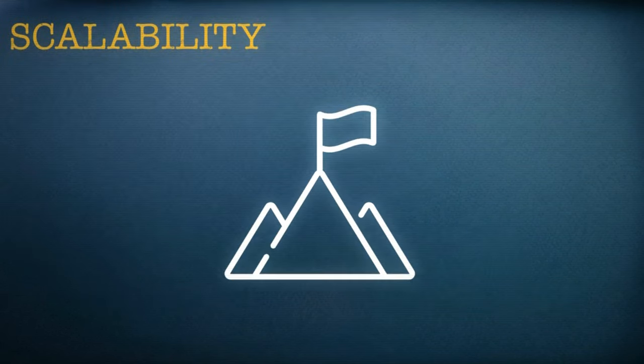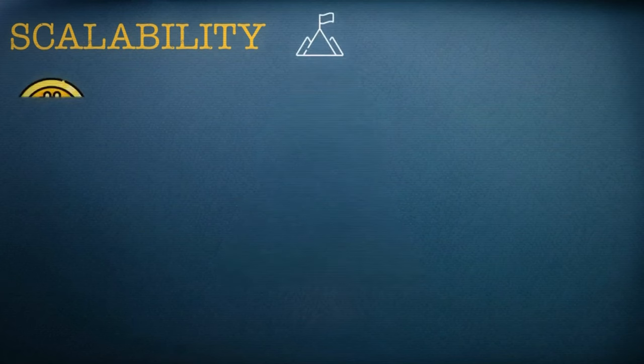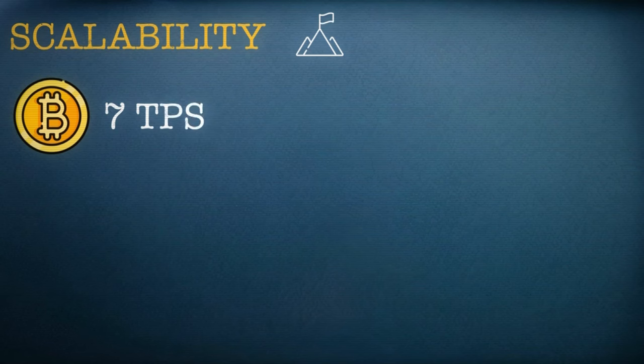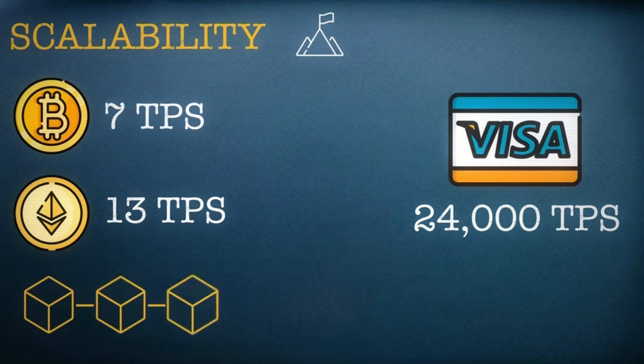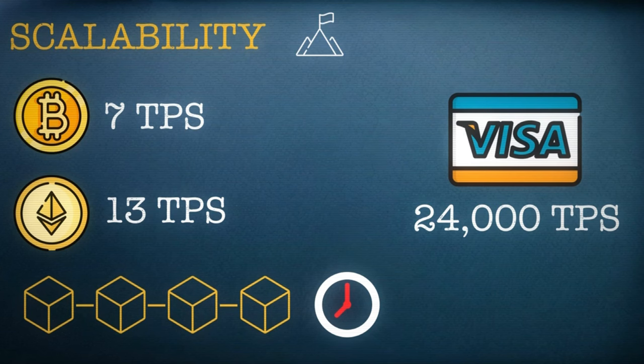Scalability in particular is a big challenge. Right now, the main Bitcoin blockchain can only handle 7 transactions per second, while Ethereum can handle 13. By comparison, the likes of Visa can handle thousands per second. This means that blockchains can suffer from congestion. It can take a long time for transactions to be finalized, and this causes fees to go through the roof.